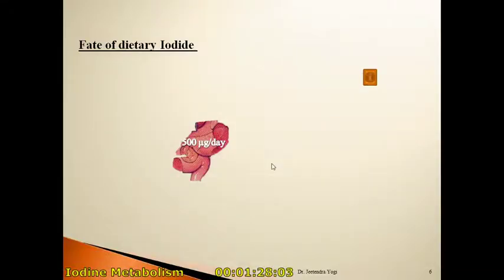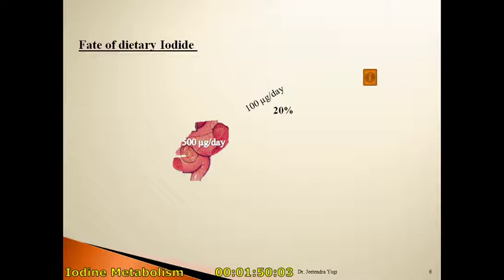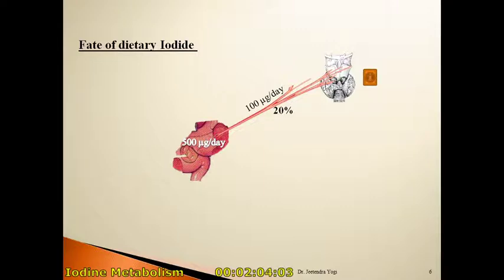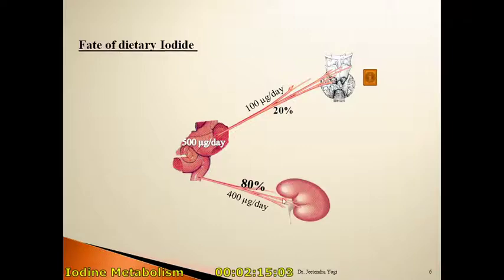Now we come to the fate of this dietary iodide. After absorbing iodide from the intestine, the average daily intake is 500 micrograms per day. After ingestion, this iodine circulates in the blood, and around 20 percent of iodine is taken up by the thyroid gland — that is around 100 micrograms per day — in the form of iodide ion. Around 80 percent of iodine is excreted by the kidney, which is around 400 micrograms per day.